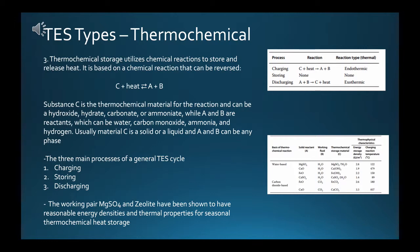There are three main processes of a general TES cycle: charging, storing, and discharging. During the endothermic charging process, thermal energy is absorbed from an energy resource causing the dissociation of thermochemical material C into two materials A and B. During storing, substances A and B are stored separately using ambient temperatures, with little heat lost except during the initial cooling of components after charging. During discharging, substances A and B combine exothermically, allowing the stored energy to be recovered and material C to be regenerated for reuse.